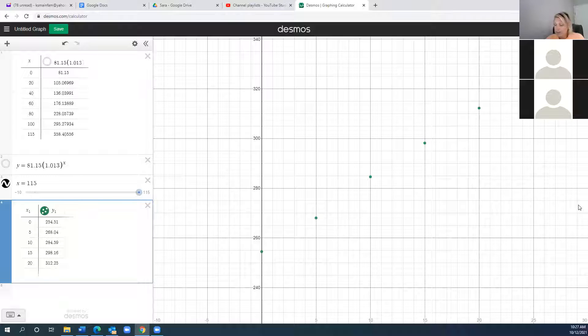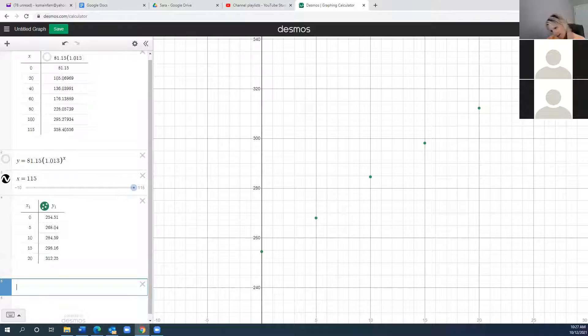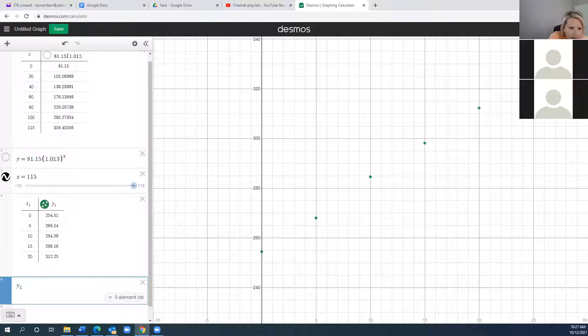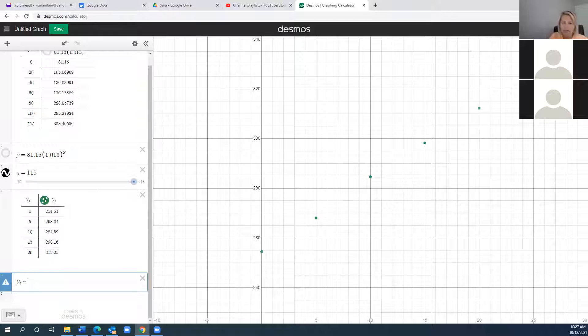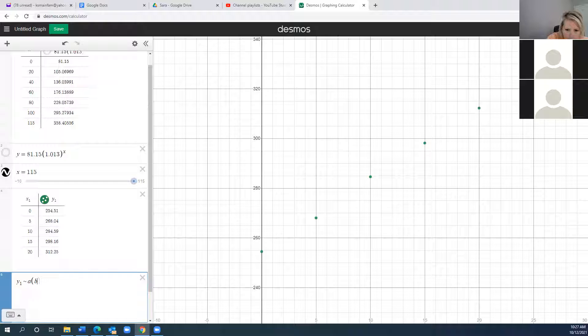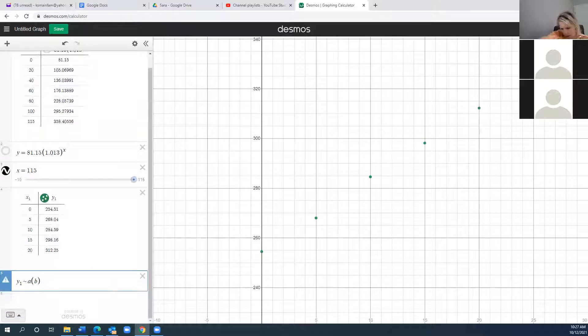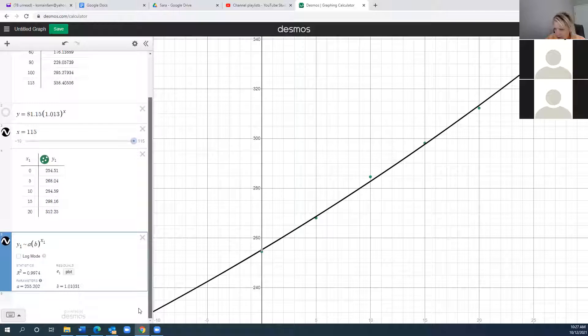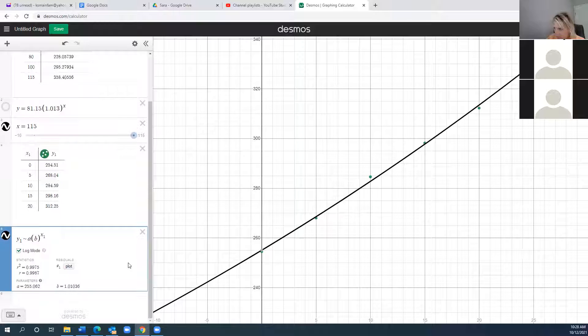Now here it looks linear, but that's just because of the way we're looking at it. So let's go down in the next line here and let's type in our model, the Y1. So Y1 tilde, remember that tilde symbol is to the left of your one key on your keyboard, and then A parentheses B parentheses raise that to the exponent of X1. And notice that I have to hit the log mode box because right now my R does not show up. And it corrects that.